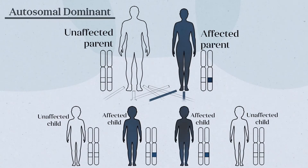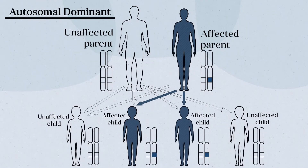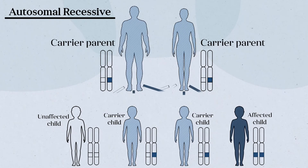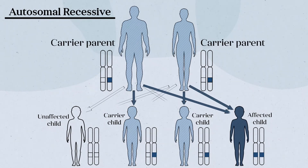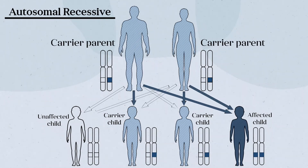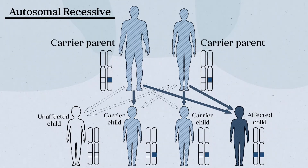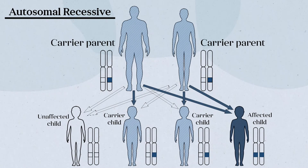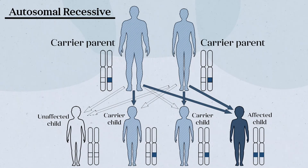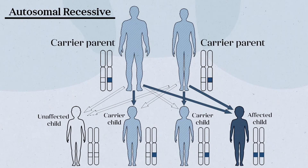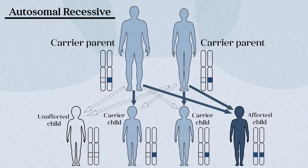Inheritance of limb-girdle muscular dystrophies can be dominant or recessive, with recessive inheritance being far more common than dominant inheritance. Because most limb-girdle muscular dystrophies are recessive, a family history may be unrevealing.